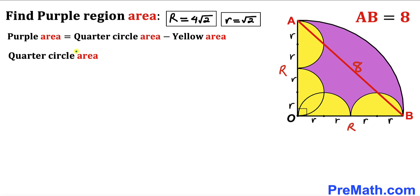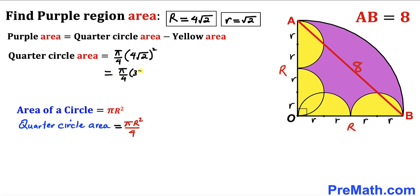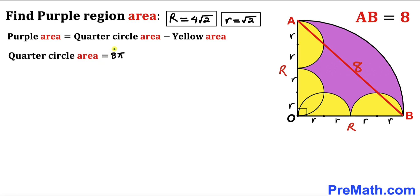We calculate the area of the quarter circle whose radius is 4√2. Recalling the circle area formula A = πR², the quarter circle area is πR²/4. Substituting, we get π × (4√2)² / 4 = π × 32 / 4 = 8π. So the quarter circle area is 8π.